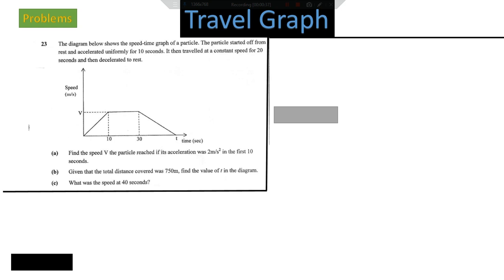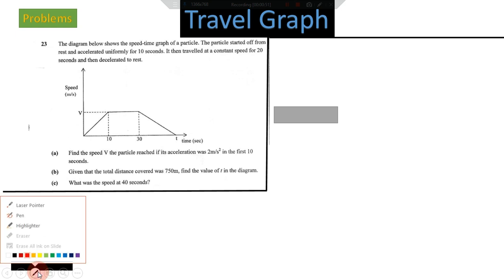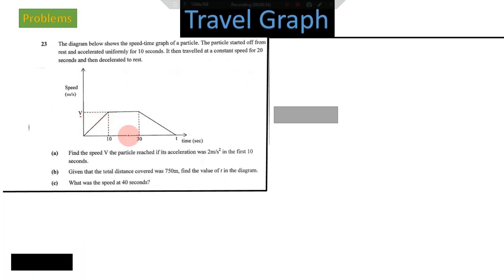The first question says: find the speed v the particle reached if its acceleration was two meters per second squared in the first 10 seconds. So we are trying to find the speed v — as you can see on the diagram, the value is not given. Let us collect our data — correction of data is very important.